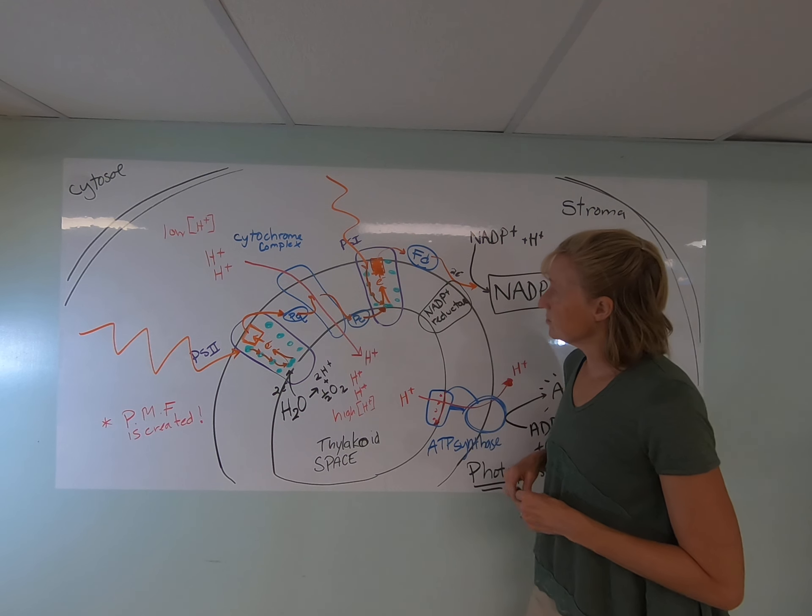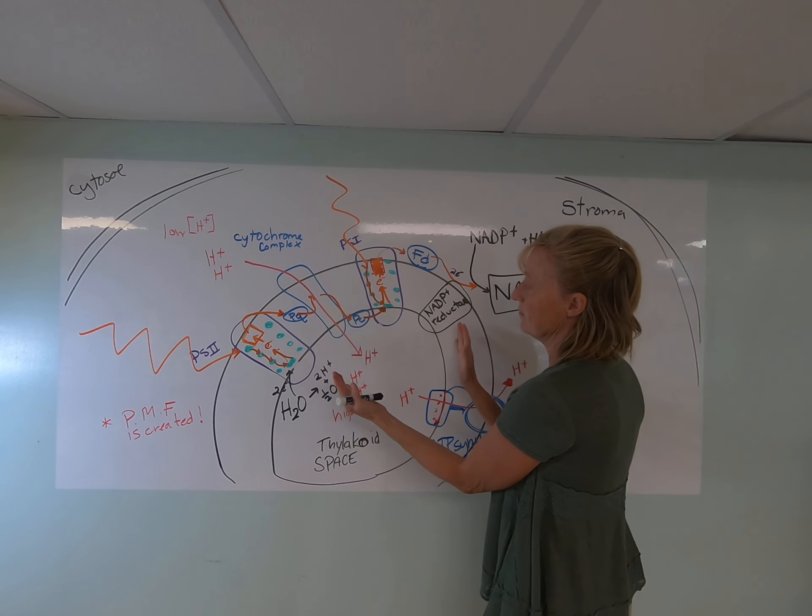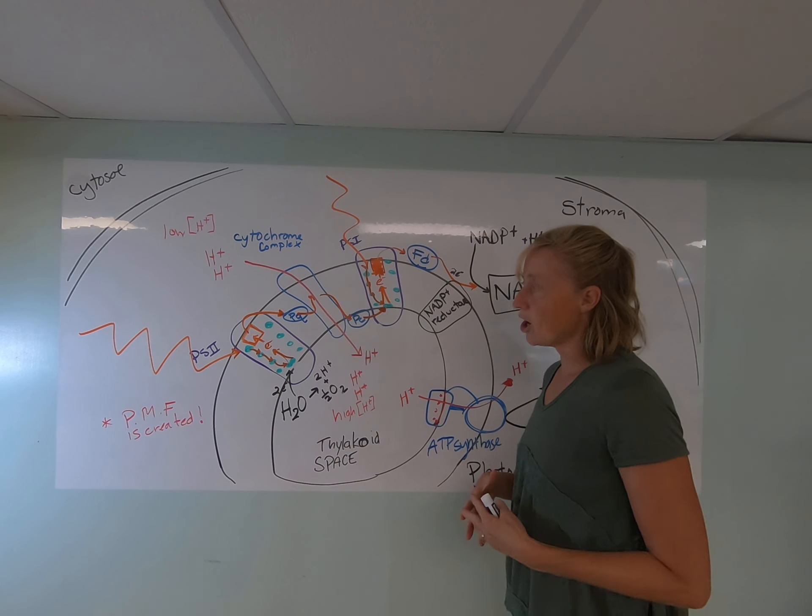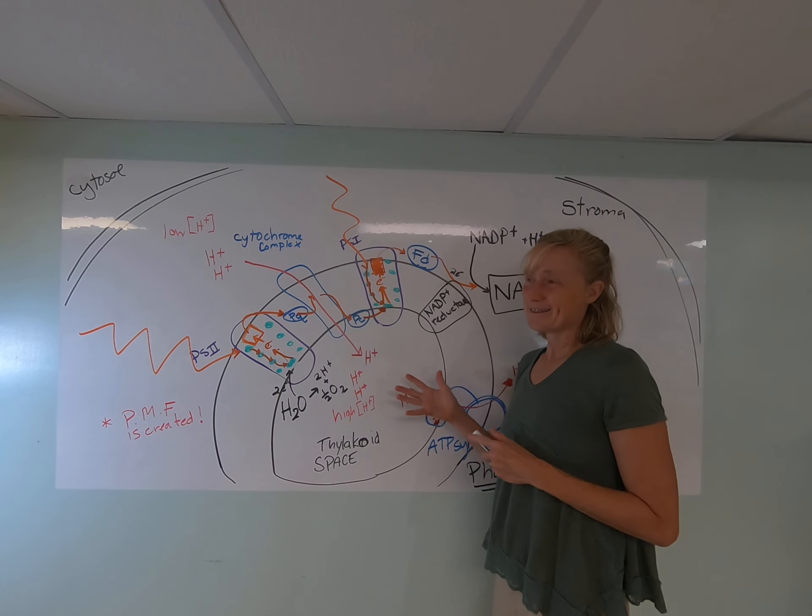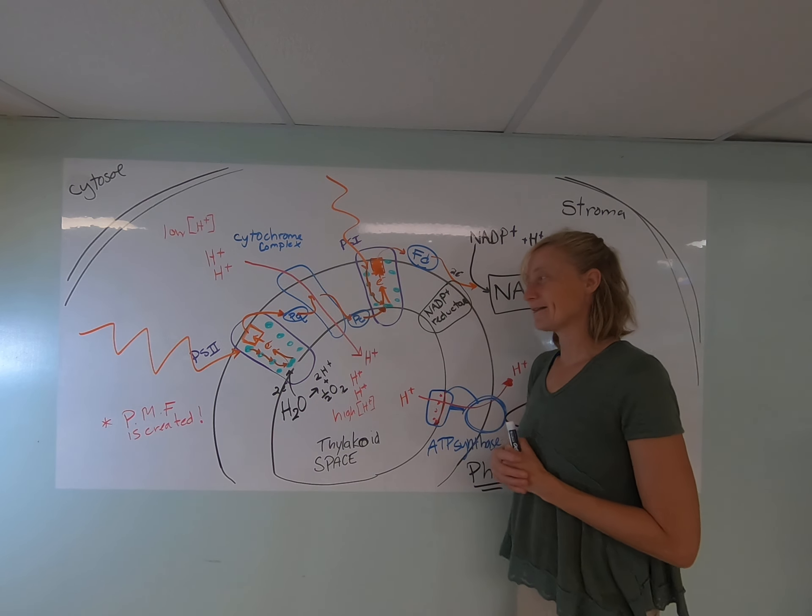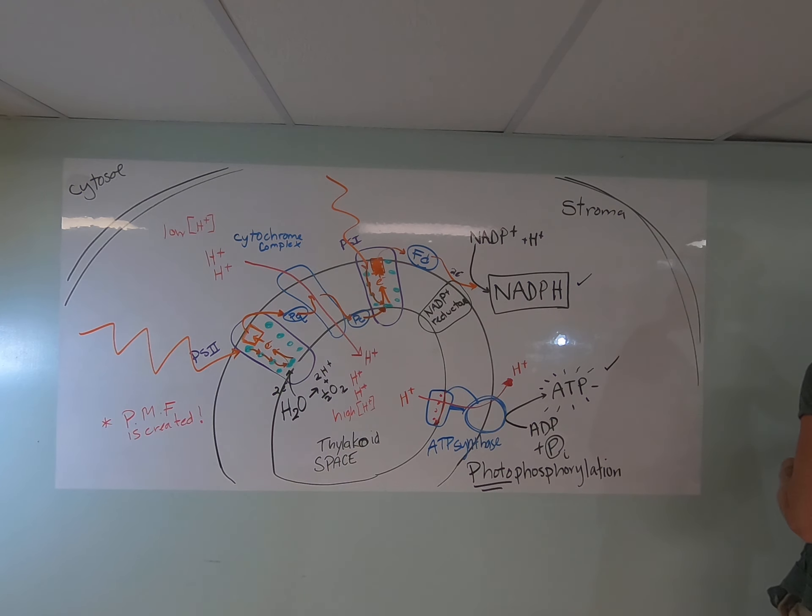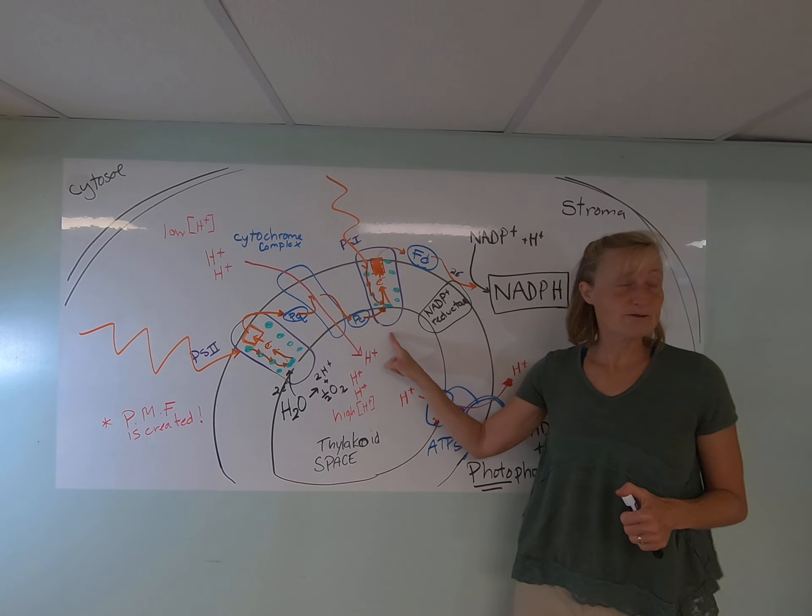And in cyclical electron flow, it uses only kind of a piece of this whole system. And so I'm going to redraw, I'm going to draw in cyclical electron flow on top of my linear electron flow. It's going to be a little messy. But in cyclical electron flow, there's a couple of things we want to know. Cyclical electron flow uses only photosystem I.